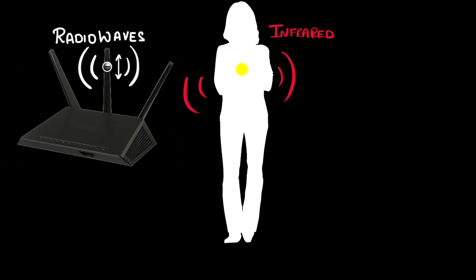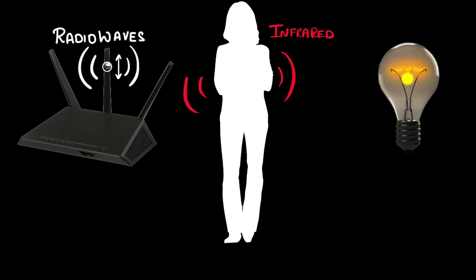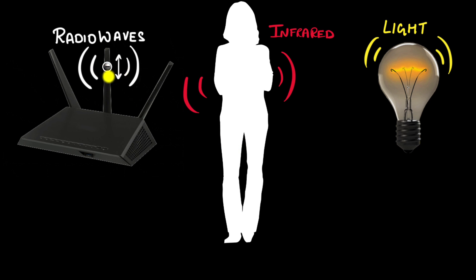Similarly, inside our bodies there are charges vibrating simply because of temperature, and that also generates electromagnetic waves — which happen to be infrared radiation. The same thing happens inside an incandescent bulb: when the filament is heated to a very high temperature, the electrons are vibrating randomly and as a result generate electromagnetic waves, giving us visible light.